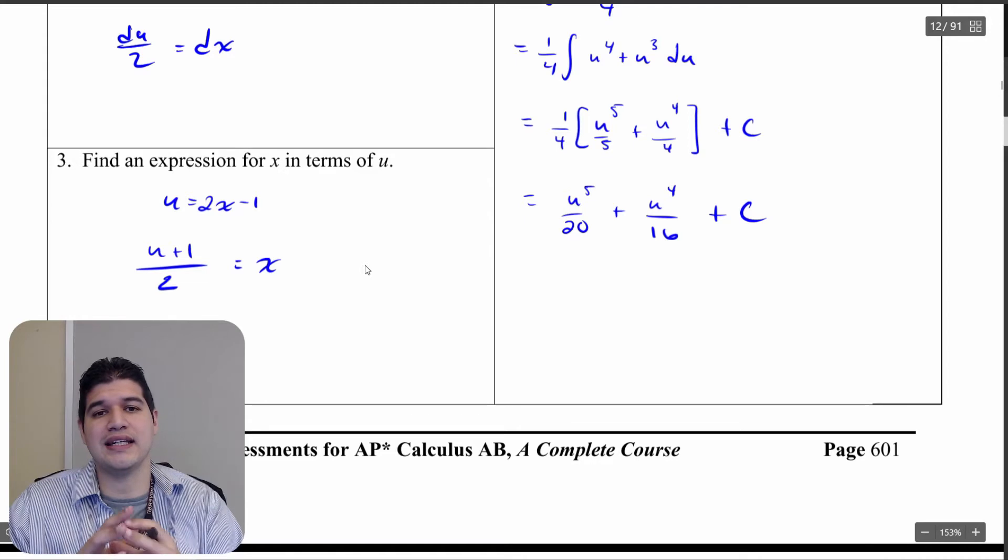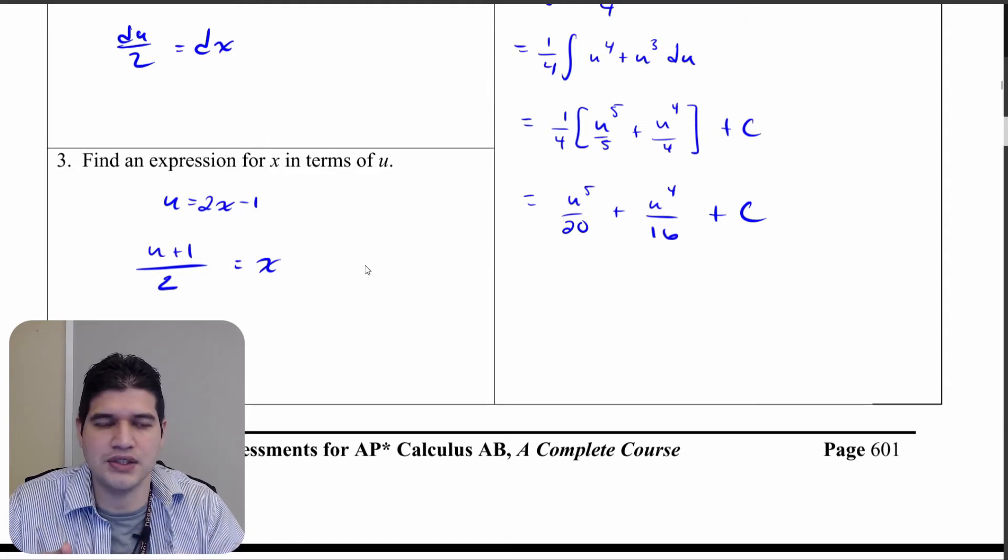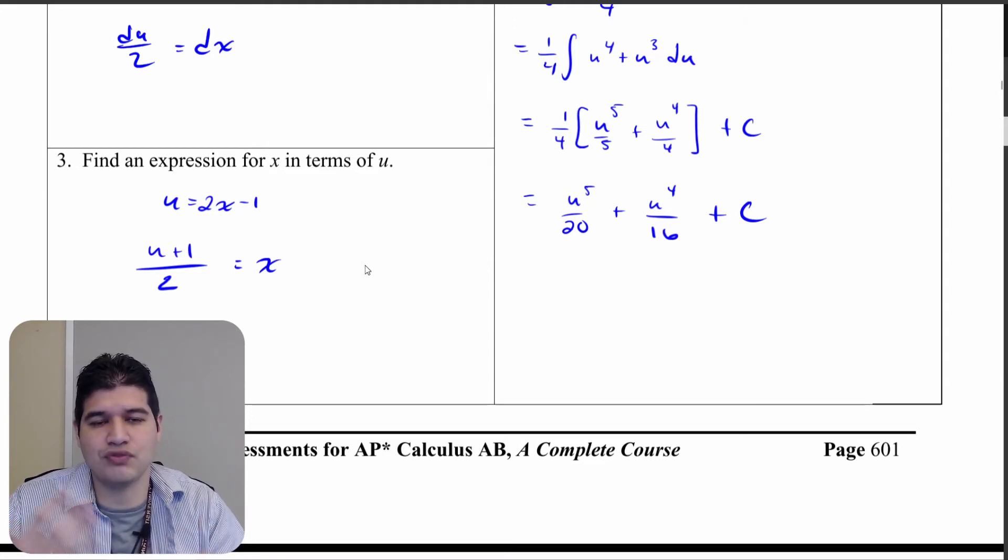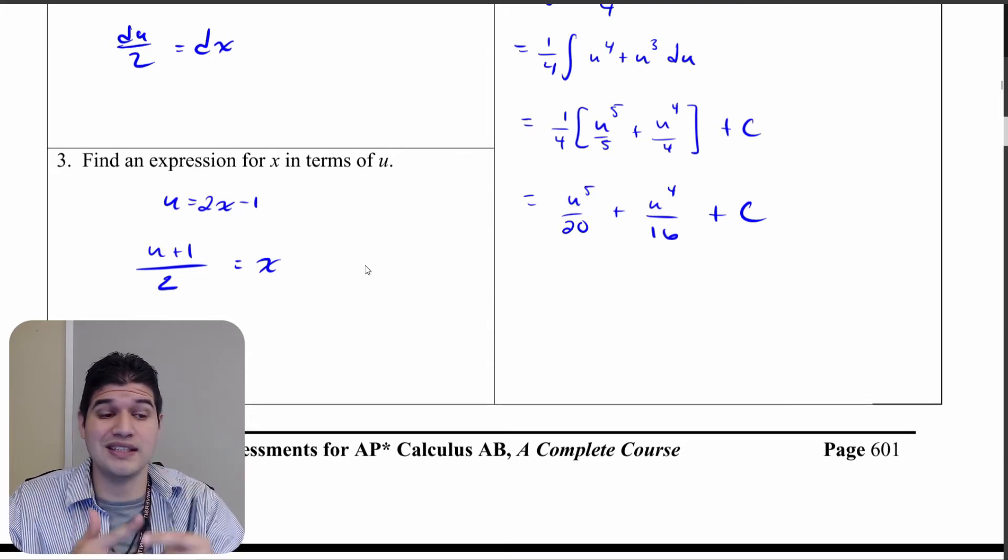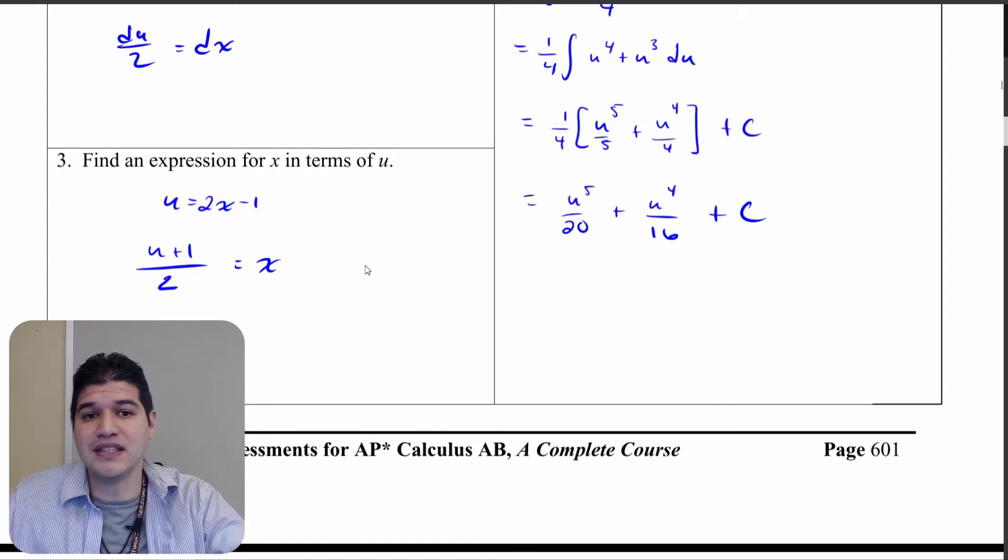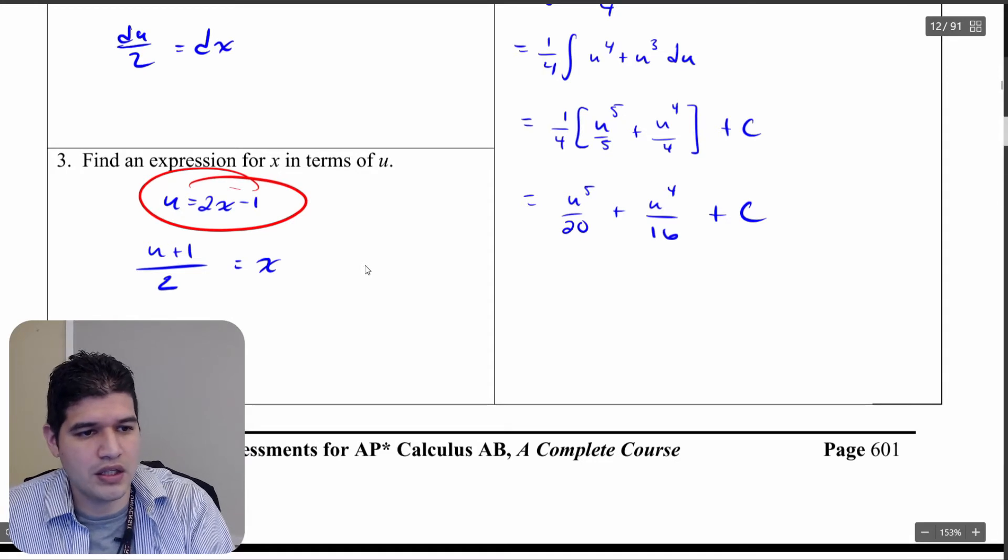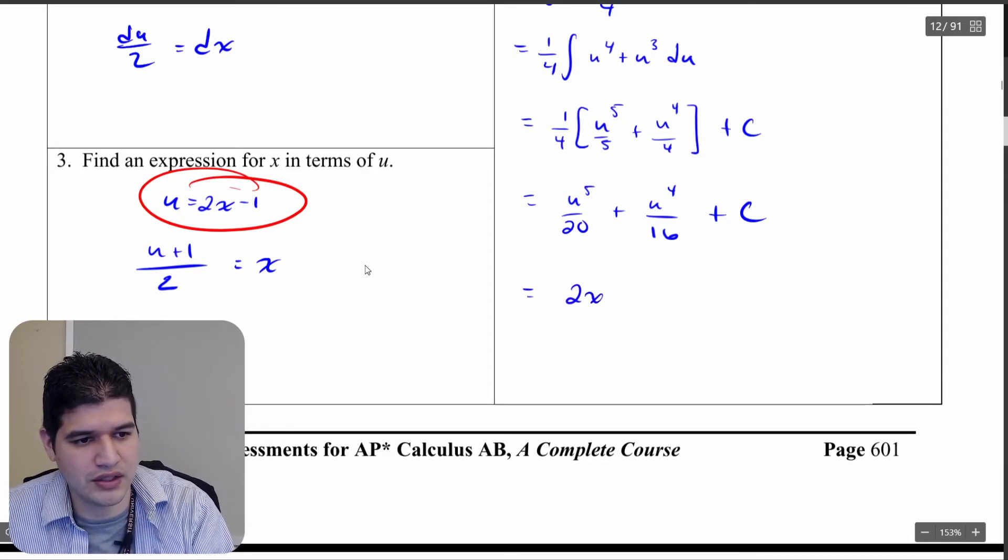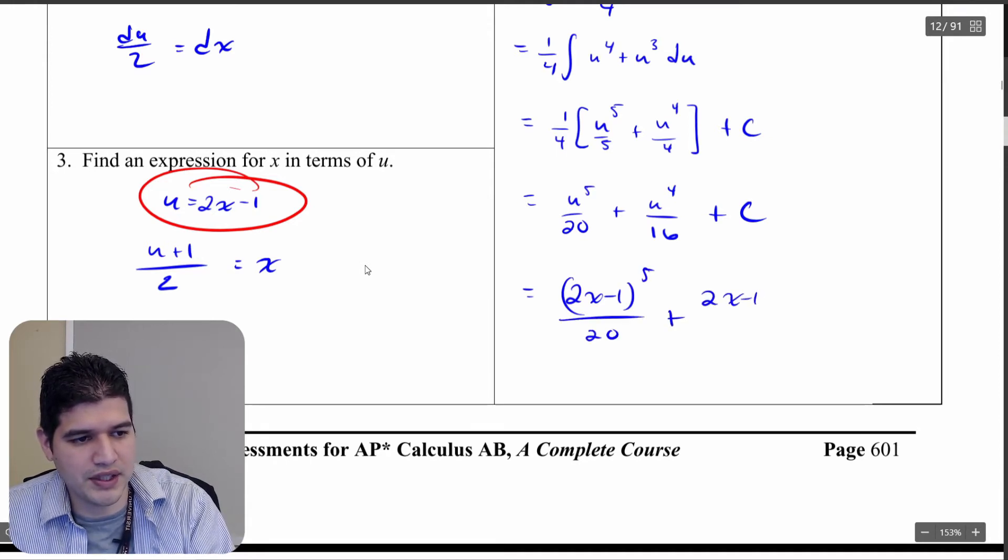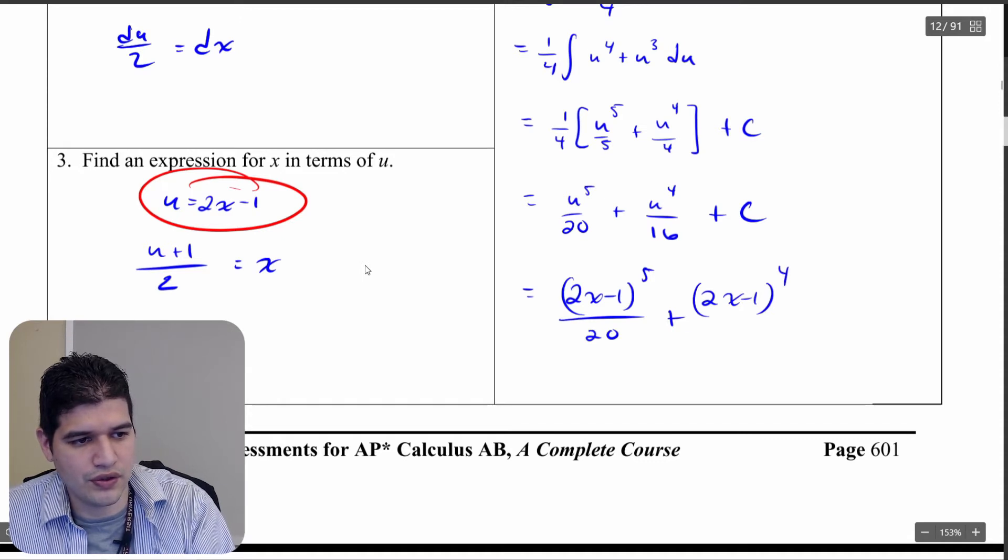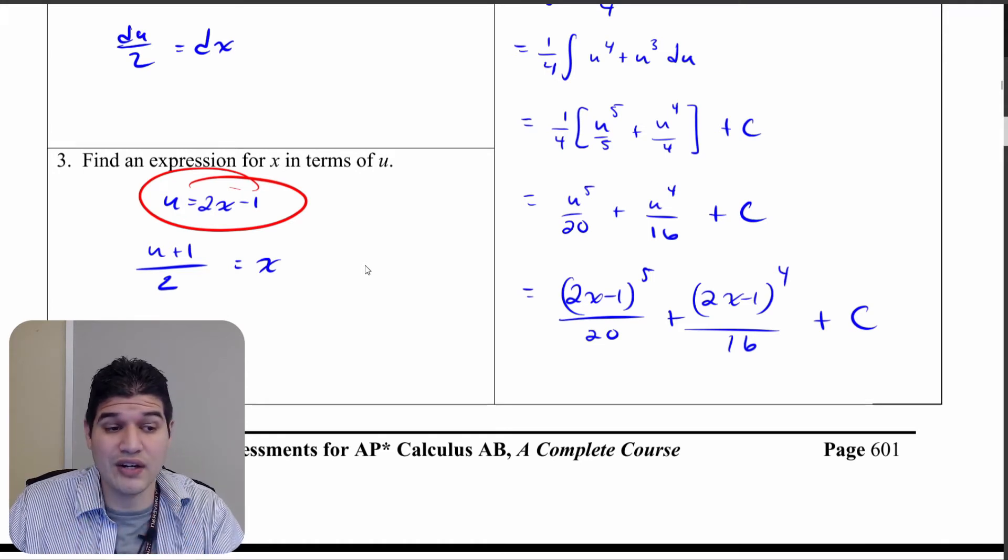The last part of this is that you don't leave it in terms of u. u is just a symbol that helps simplify the process. You can do this without the u, but honestly writing it out and saying, u is this, du dx equals this. So then from there, we have to say, what was u? Well, u was 2x minus one. So let's go ahead and bring the 2x minus one back in. So 2x minus one to the fifth over 20 plus 2x minus one to the fourth over 16, all plus c. And that right there is going to be our final answer.